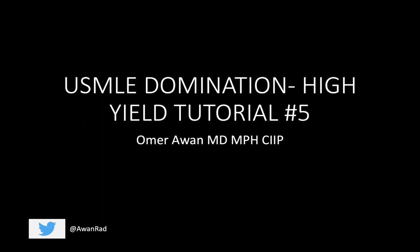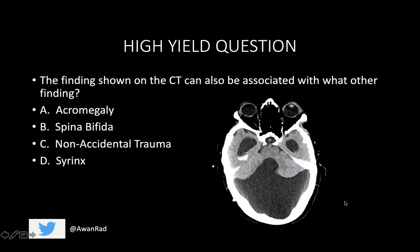Hello everyone and welcome to week five of USMLE domination high yield tutorials. We have an exciting topic today that's very high yield so let's get right into it. I want to start with a high yield question that we'll come back to at the end. The question is: the finding shown on the CT scan can also be associated with what other finding? Is it acromegaly, spina bifida, non-accidental trauma, or a syrinx? It's referring to the finding seen on this CT image through the head. I promise we'll come back to this at the very end.